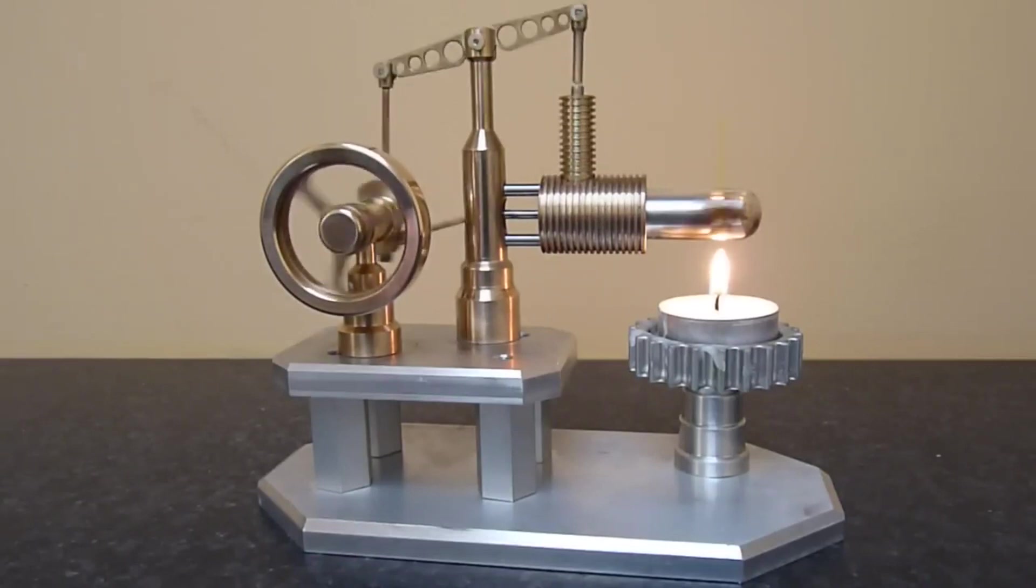The Stirling engine is a fairly simple device, a type of so-called external combustion engines. There are several types of Stirling engines. Here, we will consider the operation of a so-called beta-type Stirling engine.